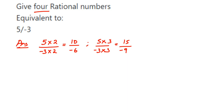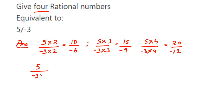Next, I'm going to multiply 5 upon minus 3 by 4, so this will be equal to 20 upon minus 12. Now I'm going to multiply by 10 — it's completely up to you which number you choose — so 5 upon minus 3 multiplied by 10 gives 50 upon minus 30.